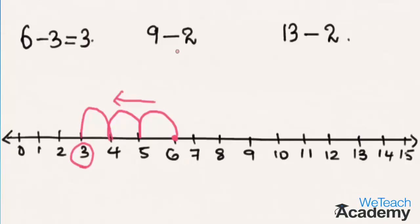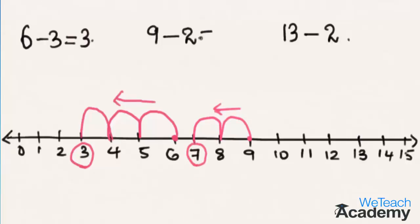The next example is 9 minus 2. We start from the number 9 and move 2 steps towards the left on the number line, and we reach the number 7. So 9 minus 2 is equal to 7.